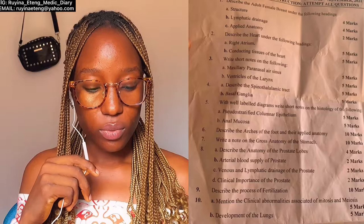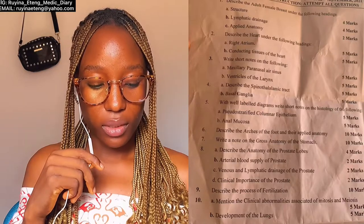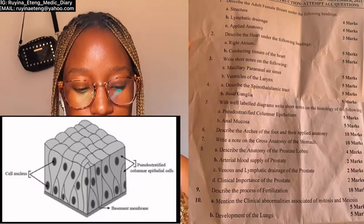Basal ganglia — very important. Then number five said, with well-labeled diagrams, write short notes on the histology of the following: the pseudostratified columnar epithelium and the anal mucosa. Since they've told you to include a well-labeled diagram, keep about half a page to draw good diagrams for them.